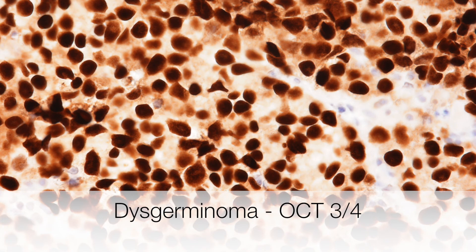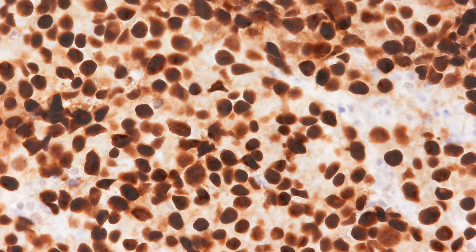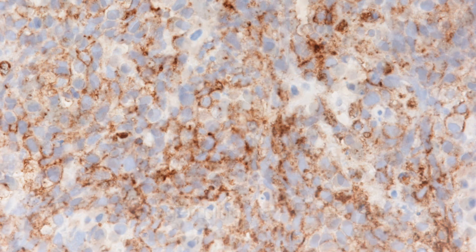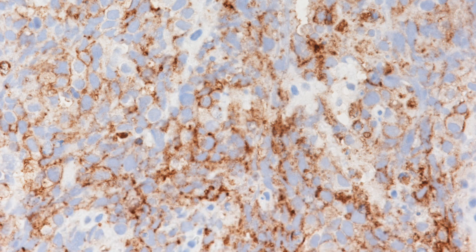This is a dysgerminoma showing positive OCT3-4, and here is the stain for placental alkaline phosphatase showing strong positivity.